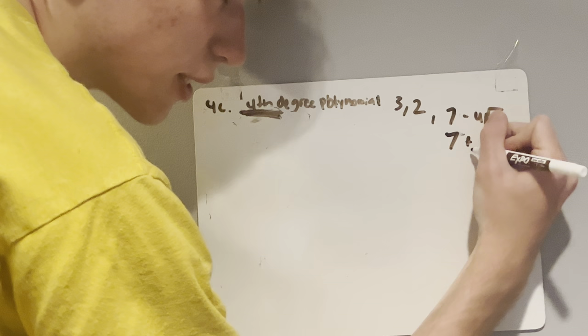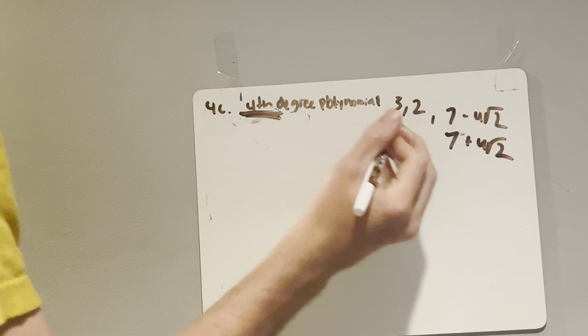The opposite of 7 minus 4 radical 2 is 7 plus 4 radical 2, so that gives us 1, 2, 3, 4 roots.